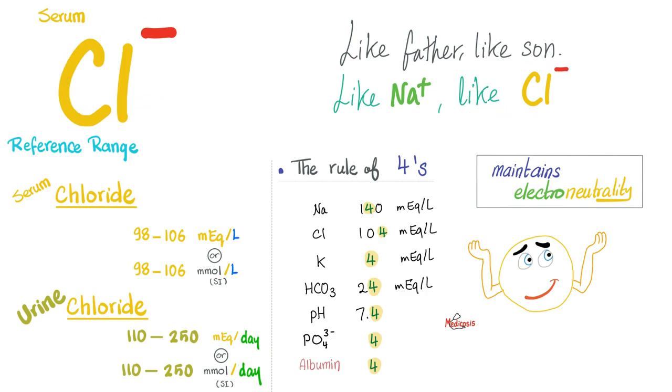To understand clinical significance, just remember sodium, and remember that chloride is always following sodium. Like father, like son. Whatever happens to sodium is usually the same thing happening to chloride. Since it's a negative charge, it has an important role in maintaining electroneutrality. If you add a positive ion to the body, you gotta add another negative ion to balance it out. Normal serum chloride level for adults ranges between 98 to 106 milliequivalents per liter.